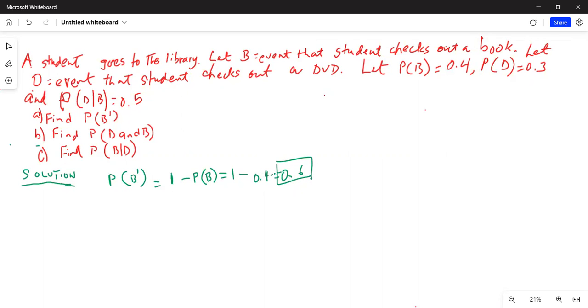The probability of B prime, which is the complement of event B or the opposite of event B, is equal to 1 minus 0.4.